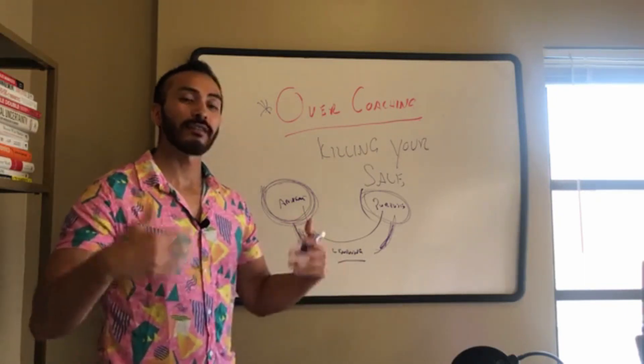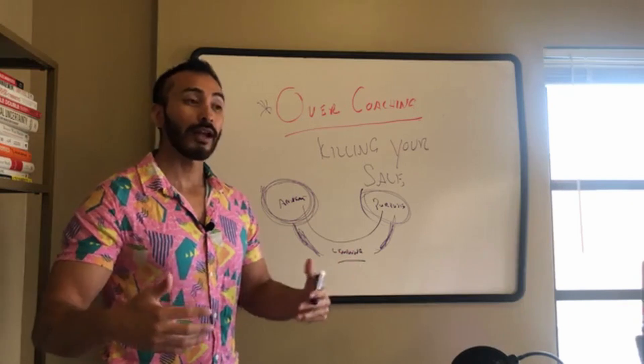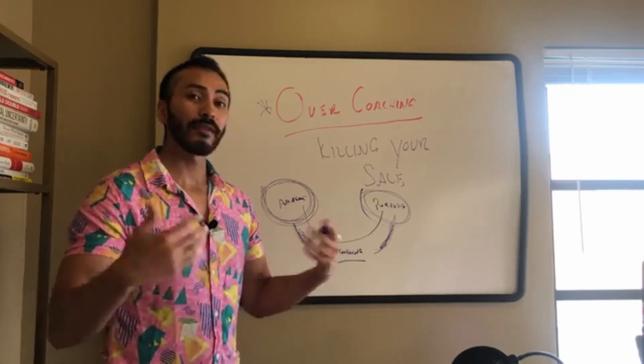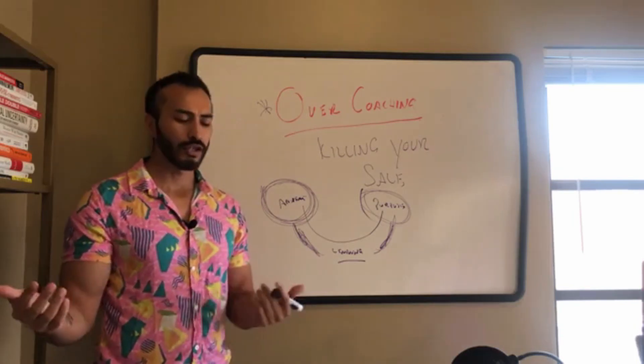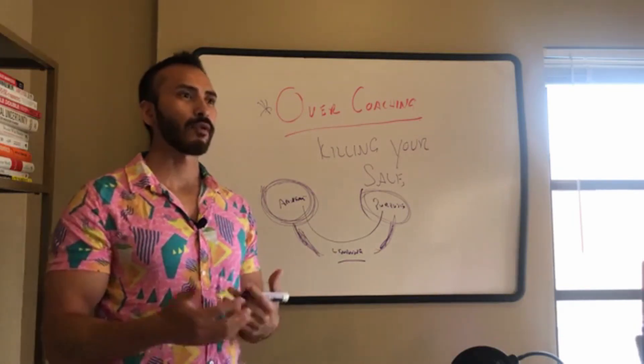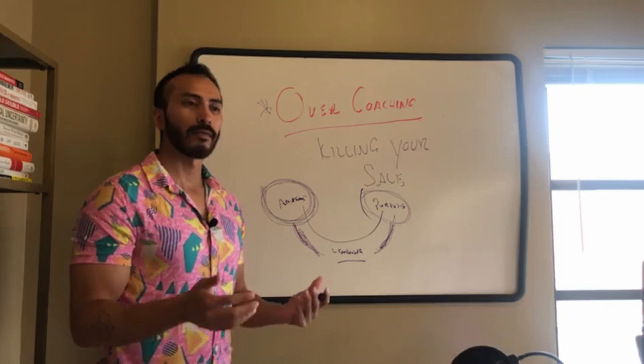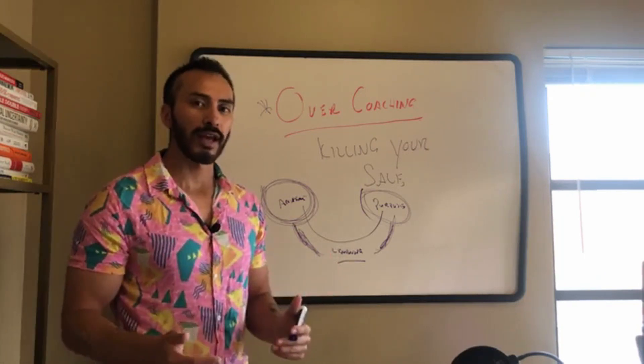Because if you create one degree of change 30 days a month, you've created 30 degrees of change. That's 30 different things you've improved on throughout the month. I don't know if it was Bruce Lee or Jackie Chan, I think it was Bruce Lee that said I would rather practice one kick per day than practice 1000 kicks in one day.